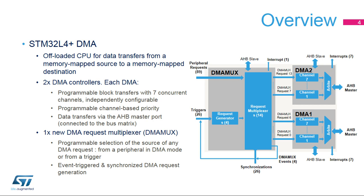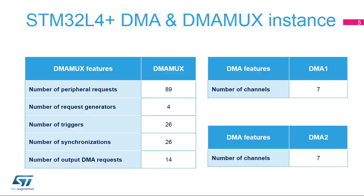There is also a DMA Request Multiplexer, or DMA MUX, with programmable selection of the source of any DMA request, from a peripheral in DMA mode or from a trigger, and event-triggered and synchronized DMA request generation. There are 89 peripheral requests and 4 DMA MUX-generated requests. There are 26 triggers and synchronization inputs, and among these 26, there are 4 DMA MUX-generated events. There are 14 DMA channels and requests.